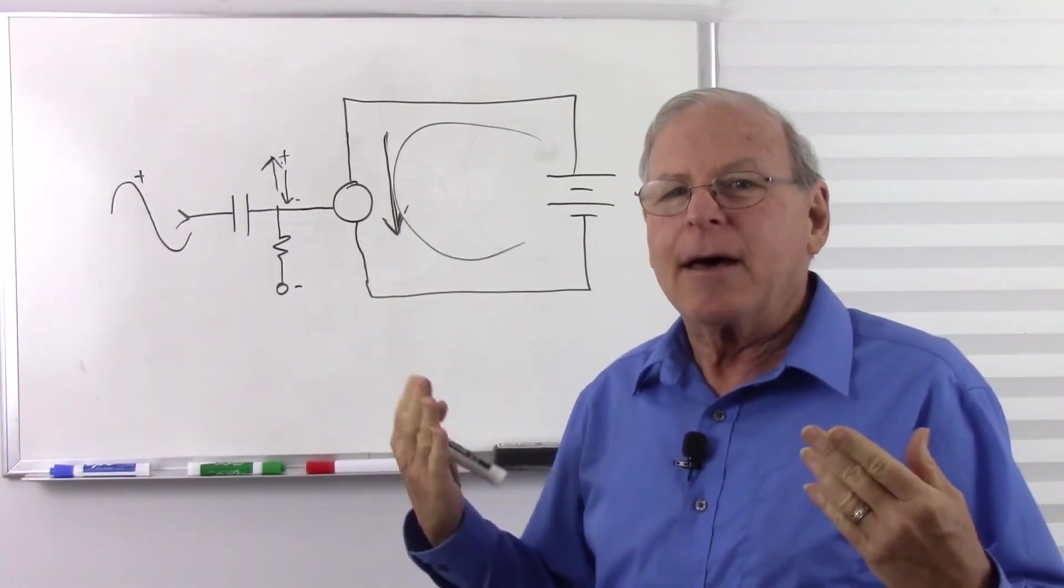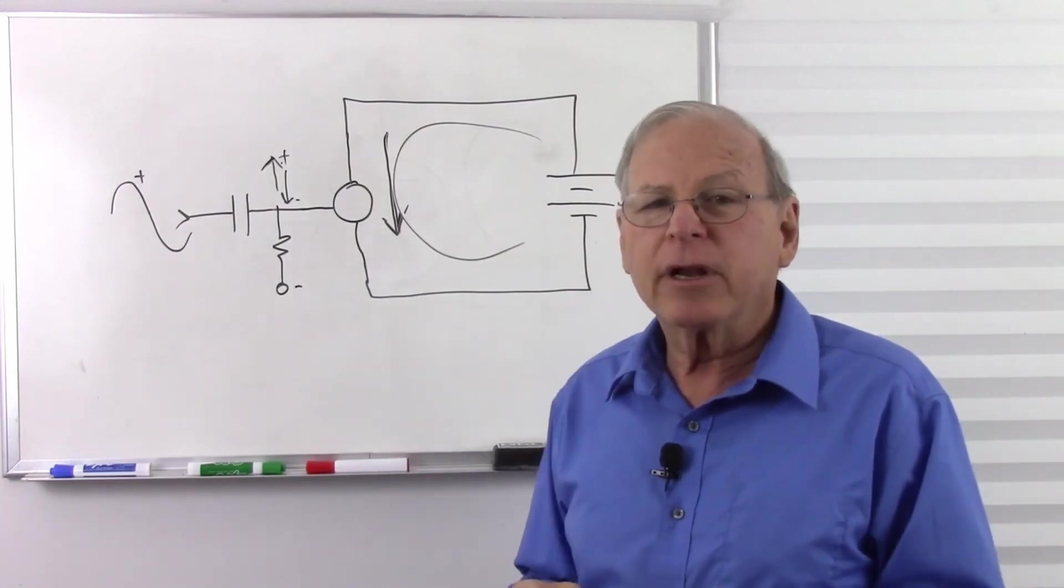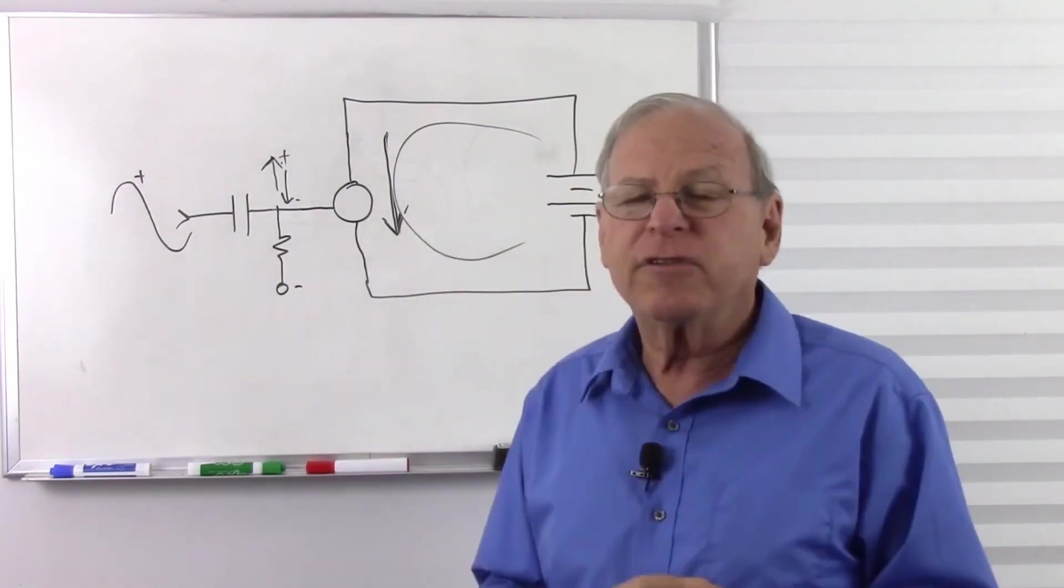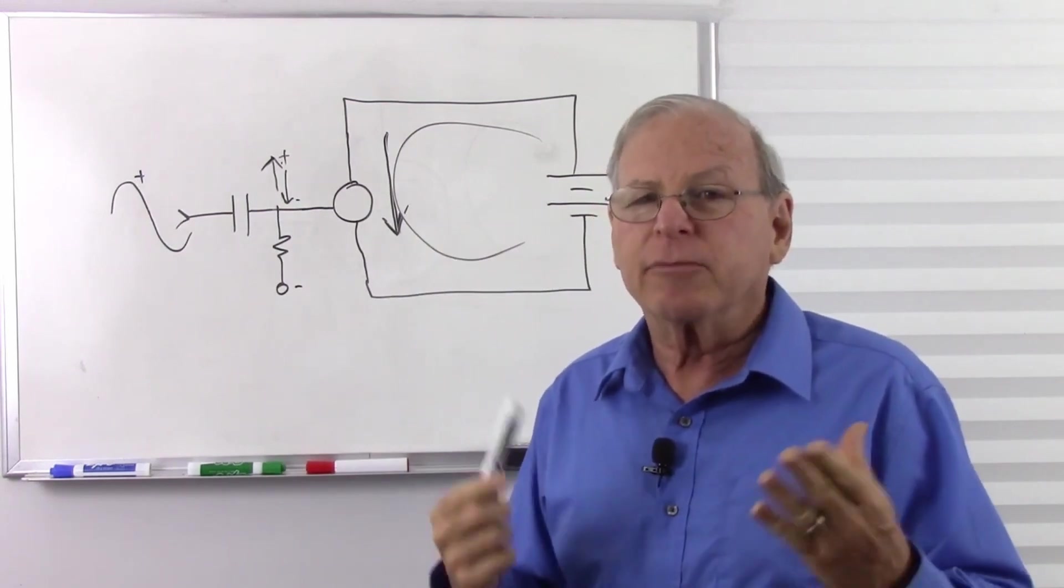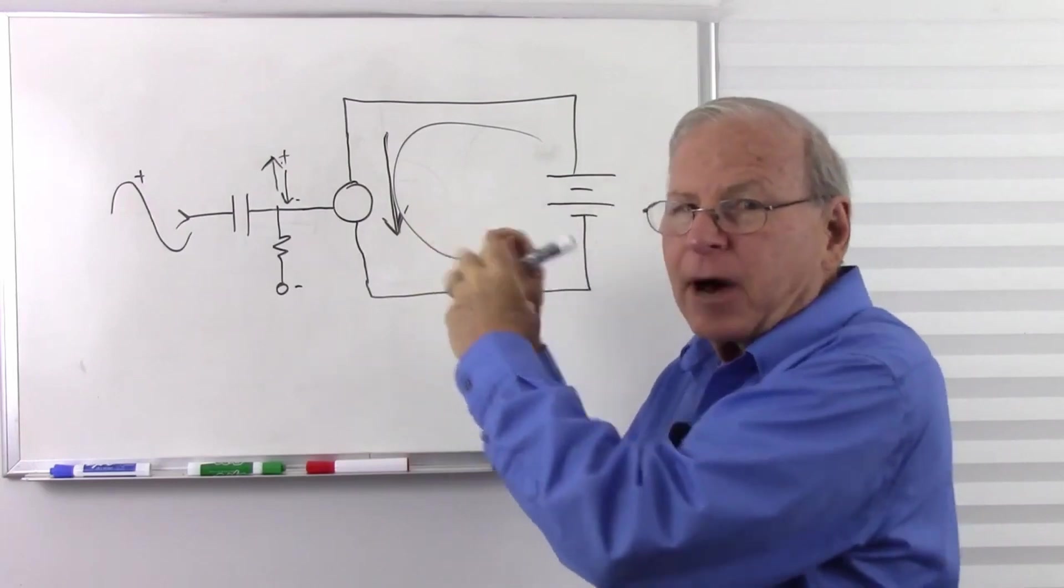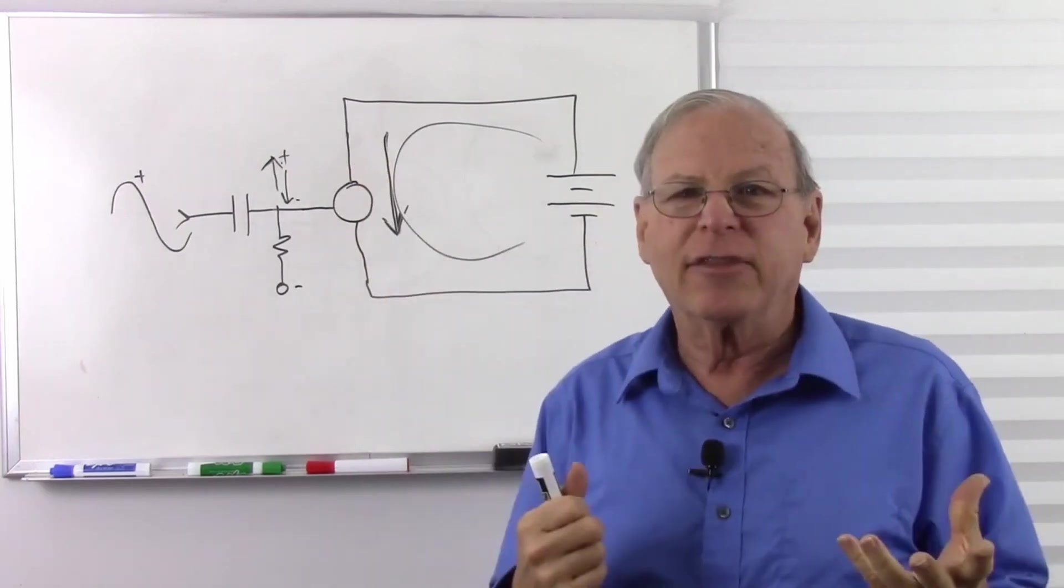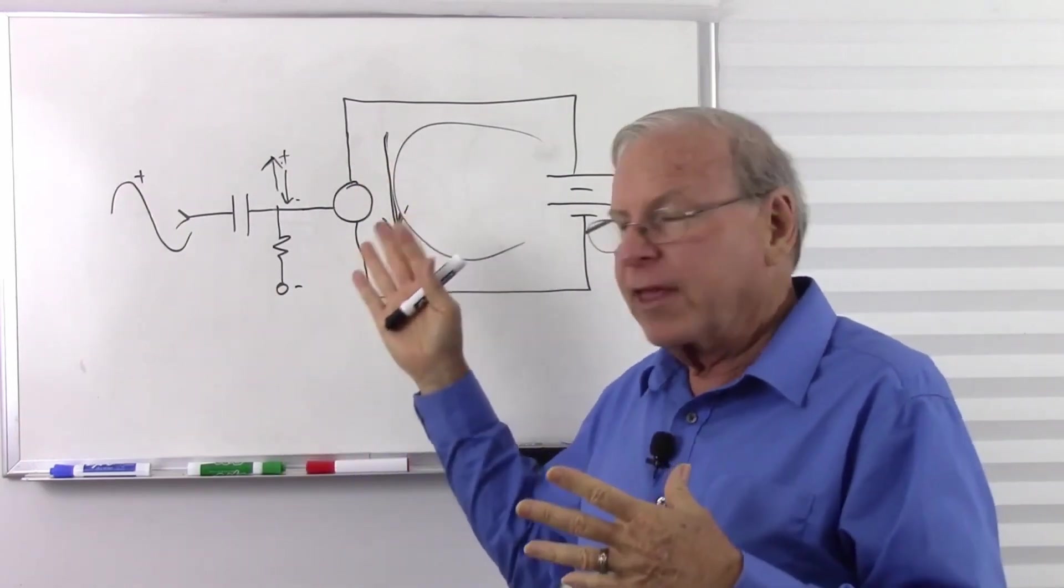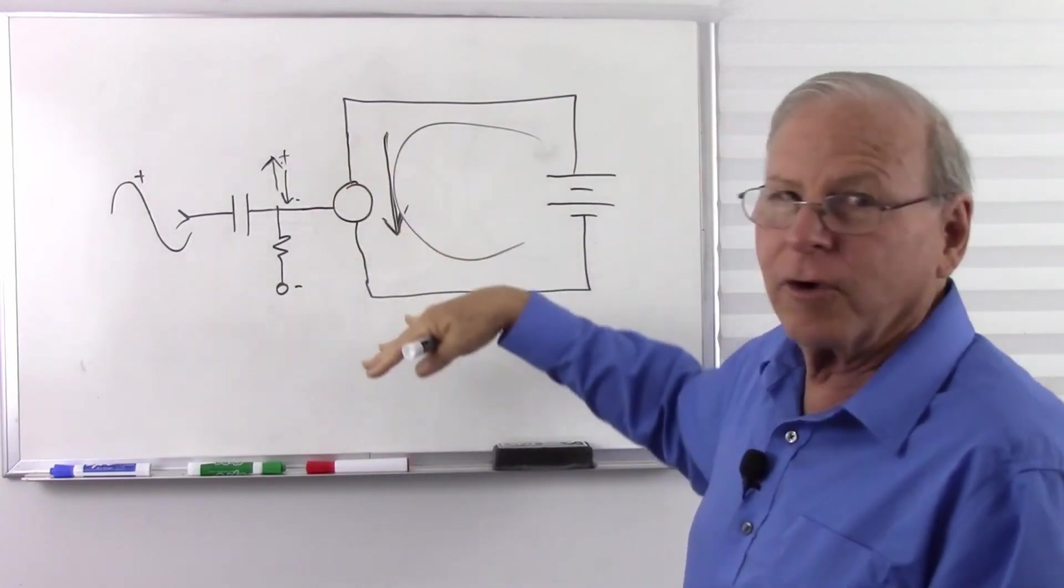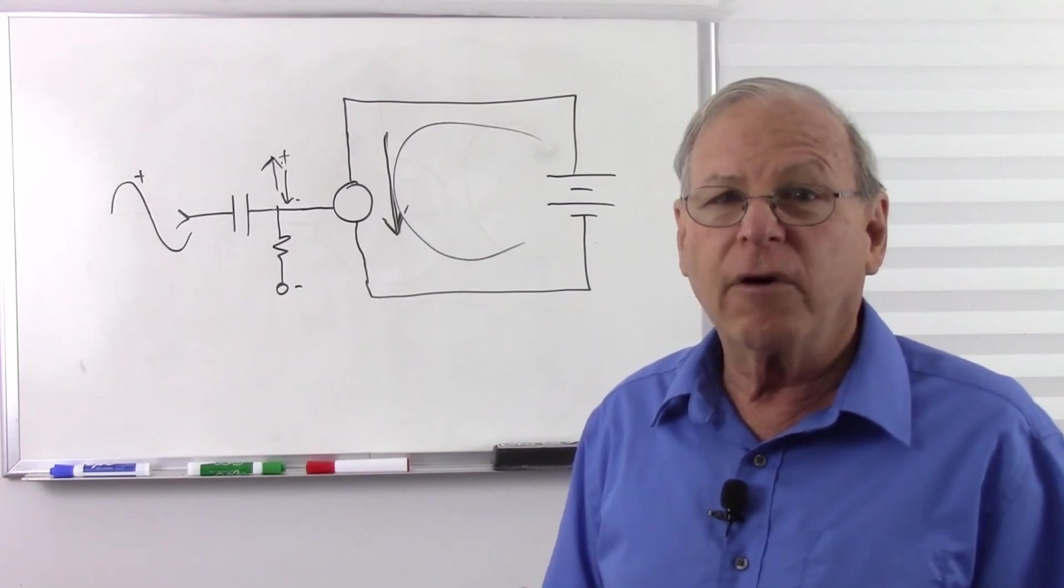Like I say, back in the day when these were ubiquitous, scholars and engineers often used conventional current to analyze the circuits. But it was much more common to use electron flow because people couldn't take their minds off of the electrons inside the tube. But if you ignore that, which you really can once you get to the circuit level, we don't need to know what's going on in the tube. It's very easy to use conventional flow.